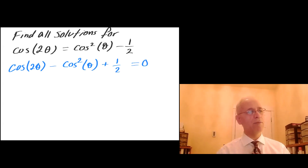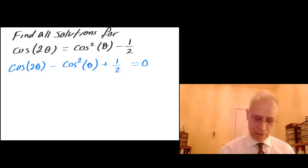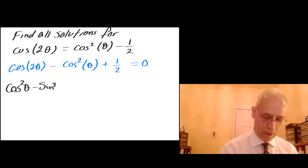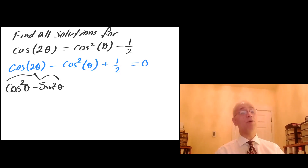Now I'm going to use the identity for cosine of 2 theta and exchange that with cosine squared of theta minus sine squared of theta — that was the identity for cosine of 2 theta.